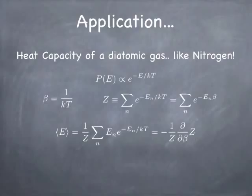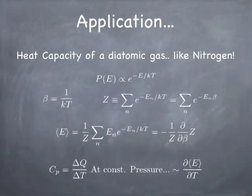Since the exponential is e to the minus energy times beta, if you take the derivative with respect to beta, that brings down the energy — and that is exactly what you'd need to do to get the expectation value of the energy. So it turns out the expectation value of energy is minus 1 over Z times the beta derivative of the partition function, or sometimes written as the logarithmic derivative with respect to beta of the partition function. The heat capacity is the derivative of the expectation value of energy with respect to temperature — it's delta Q over delta T. So if we know the partition function, we can calculate the expectation value of the energy and its temperature dependence, and from that we can get the heat capacity.